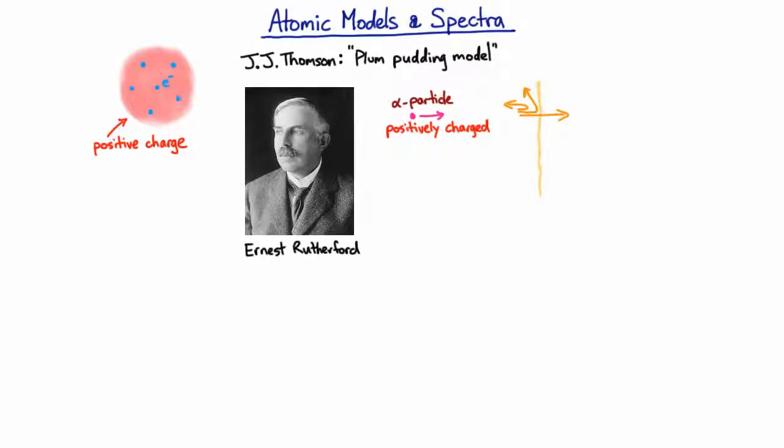And what this said to Rutherford was that the positive charge inside the atom must be condensed down into a really, really small volume. And so he had a new model of the atom which had a small positively charged nucleus in the center and then electrons going around the edge. And these electrons will be going around in orbit around the nucleus.